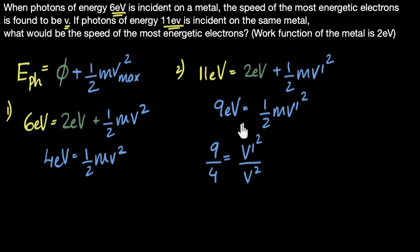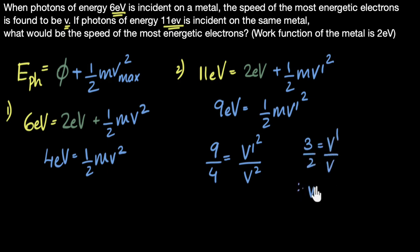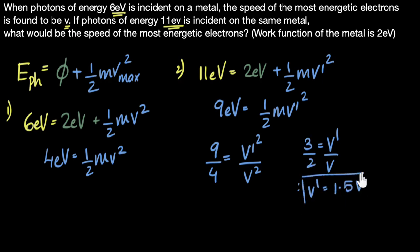Taking the square root of both sides: 3 over 2 equals V' over V, so V' equals 1.5 times V. That's the new speed.